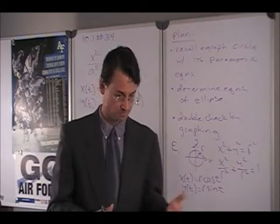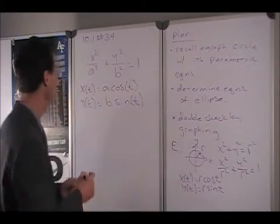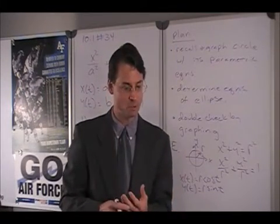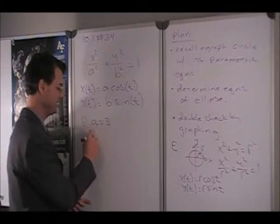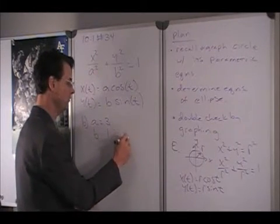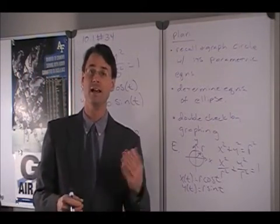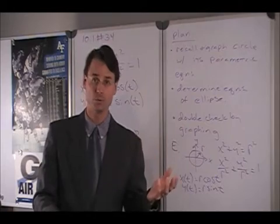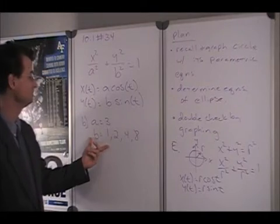Now we can double-check by graphing, but when we graph it we need to pick values for a and b. Part B says to use these parametric equations to graph the ellipse when a equals 3 and b equals 1, 2, 4, and 8. So we really have four different ellipses to graph: a equals 3 with b equals 1, b equals 2, b equals 4, and so on.